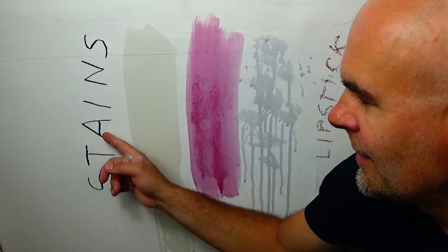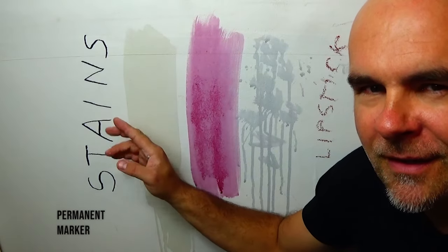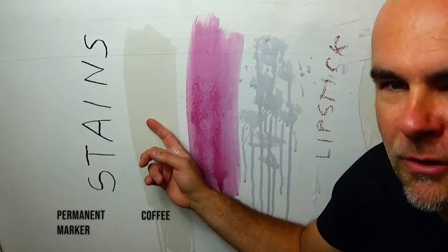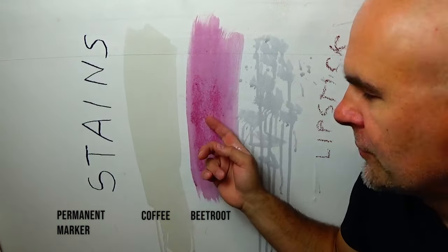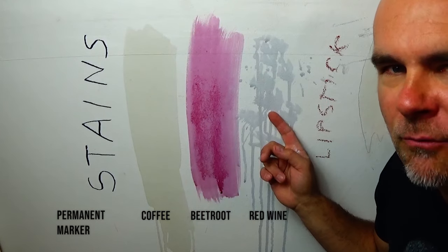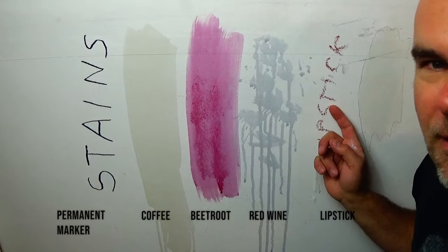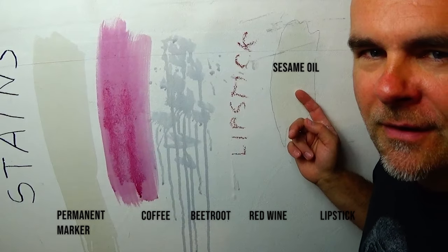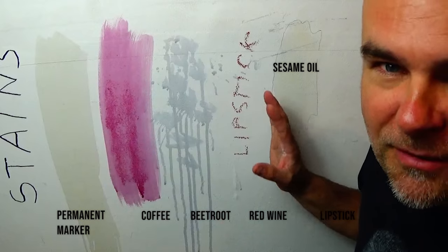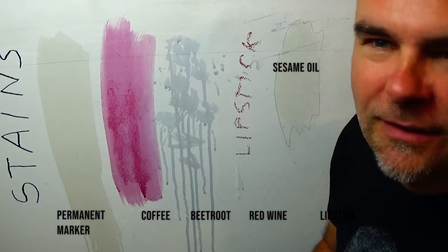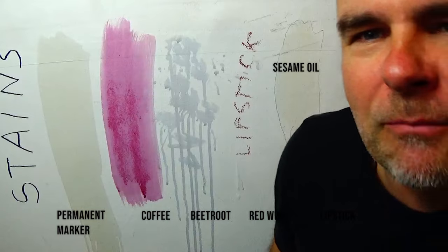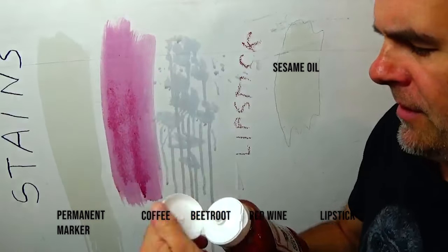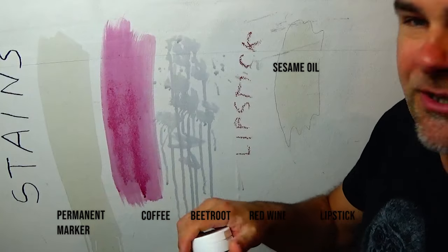So what we've got here, this is the permanent marker. I think this will be the most difficult to remove. Then we've got a morning coffee, a beetroot sauce. This is the red wine. My wife's lipstick. And this is some oil. I think it might be difficult to remove as well as this is quite sticky. And I've got one more thing. People use ketchup, a lot of ketchup. So let's make some ketchup stain as well.